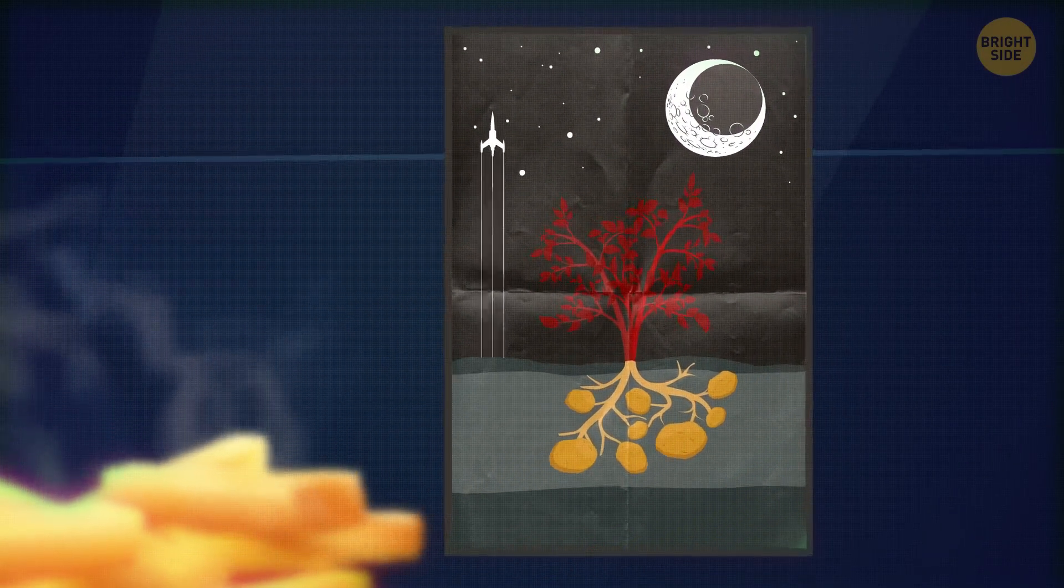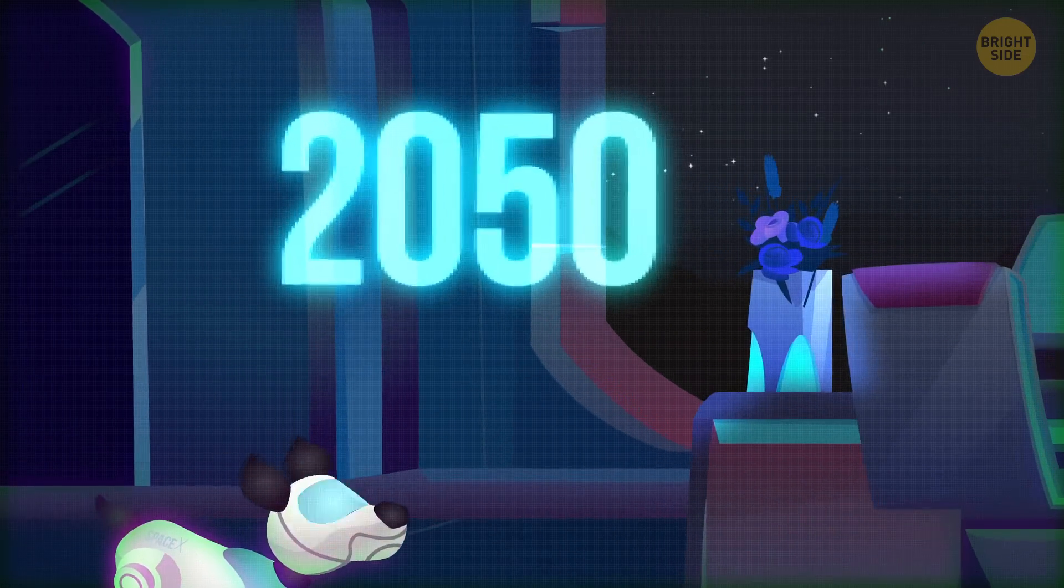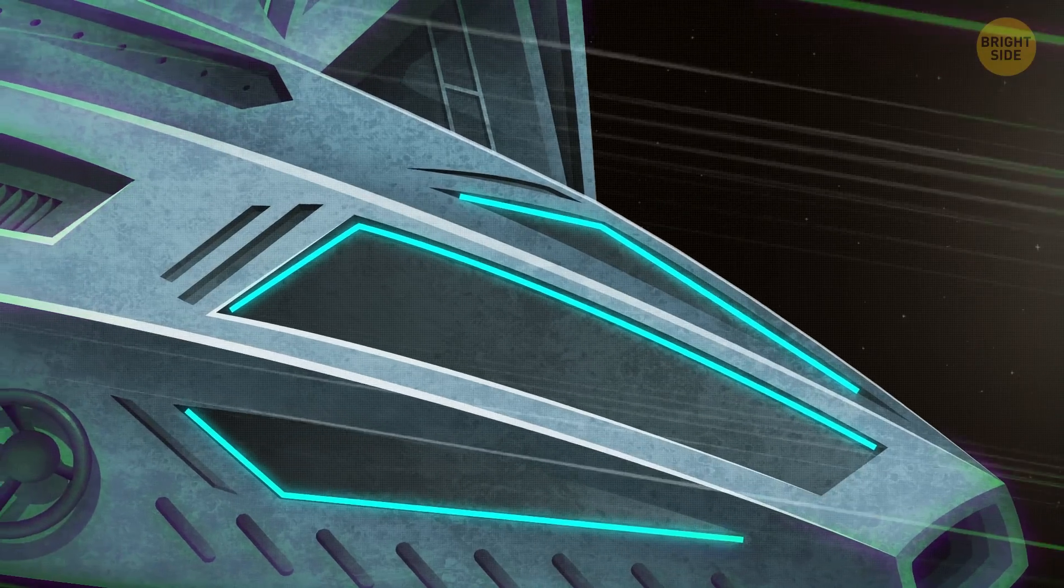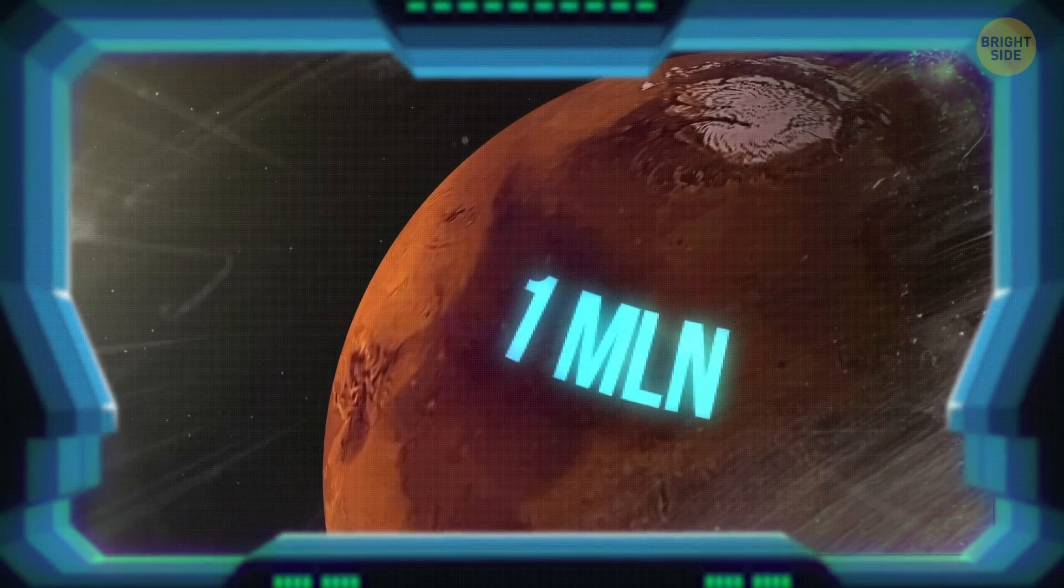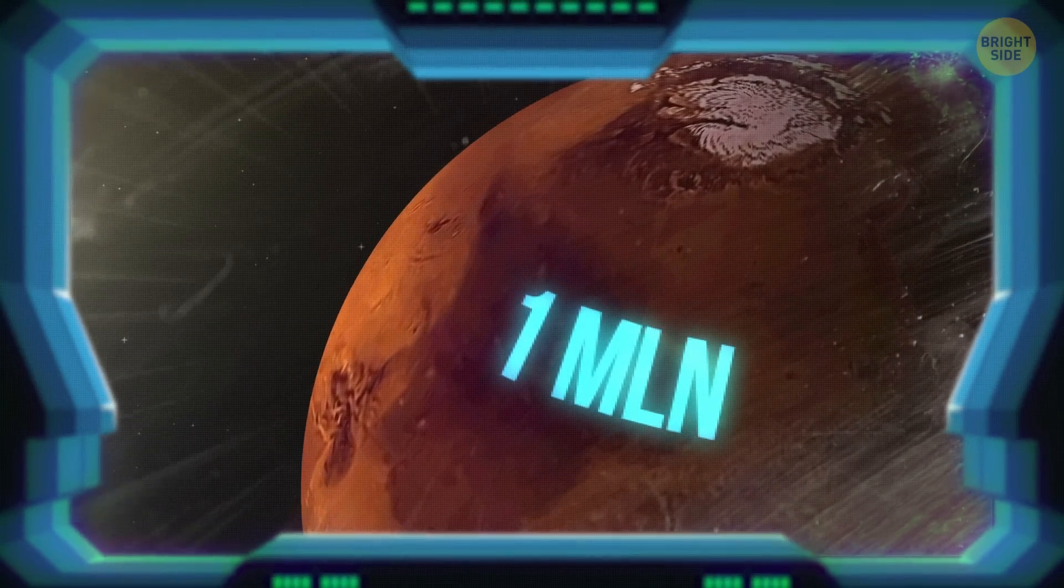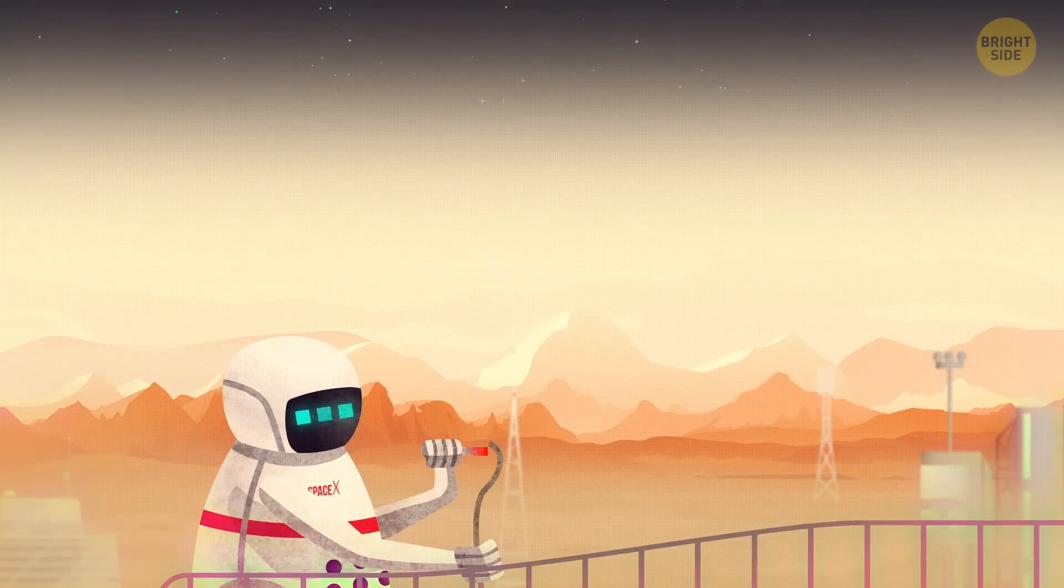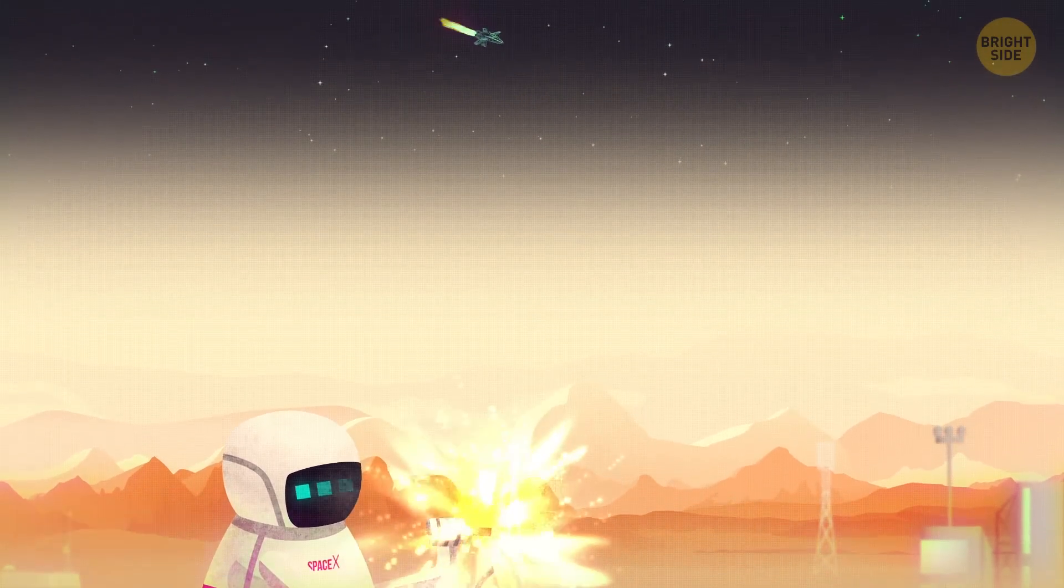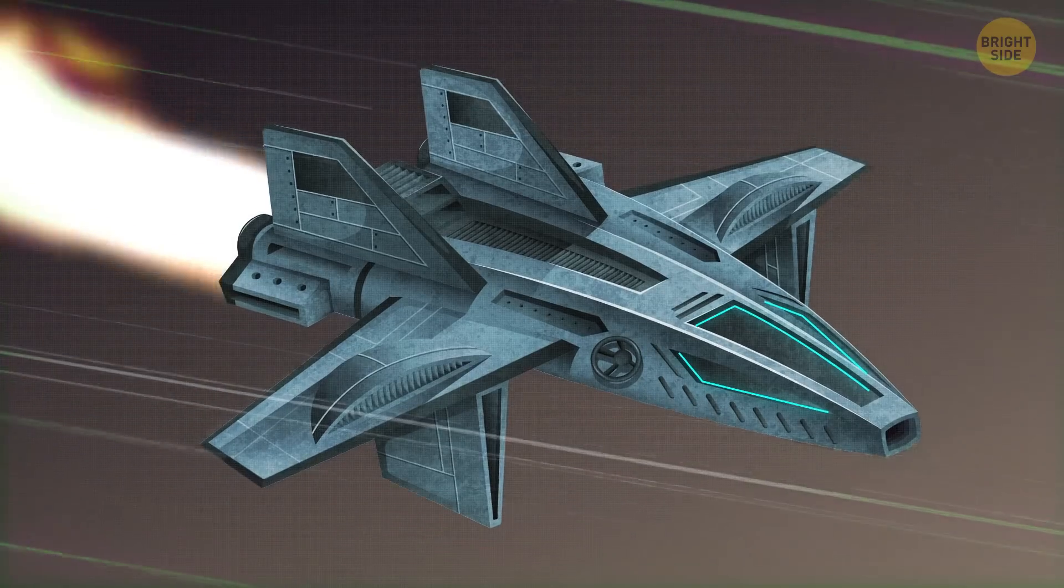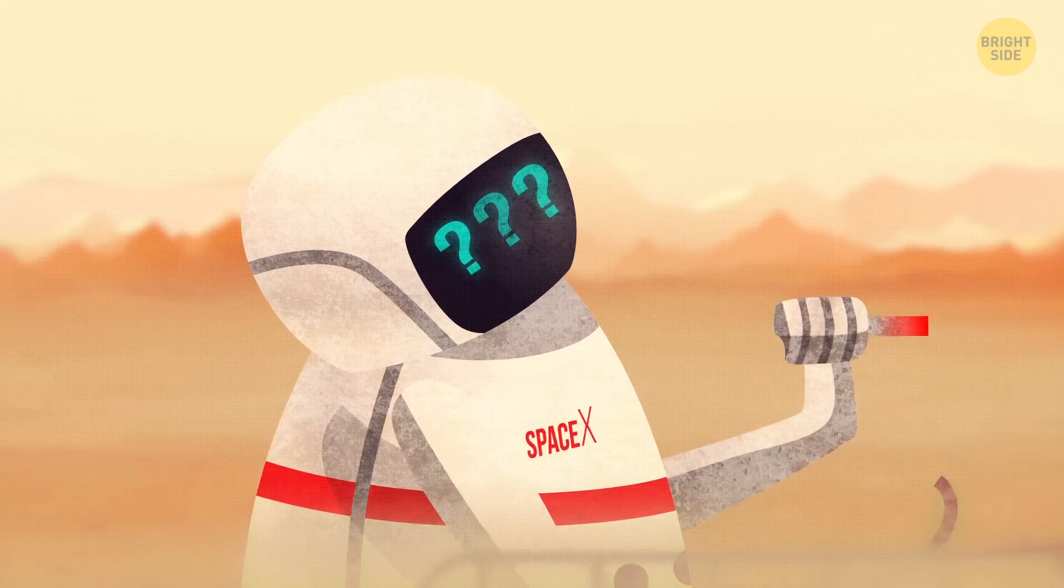This scenario could be true as early as 2050 and even sooner. Elon Musk plans to send a million people to Mars by then. Very ambitious, but incredibly difficult to accomplish. Flying to Mars is very expensive and time-consuming, and it consists of several stages.